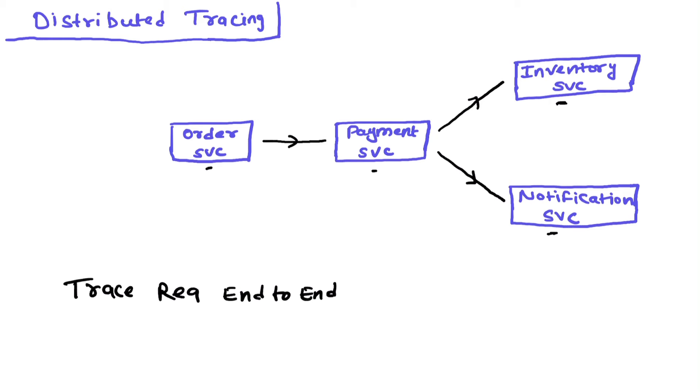In this example, let's assume some user comes to your e-commerce store and places an order. Now every system or module in this architecture is independent, and different teams are working on this. There is a different team working on the order service, different team for payment service, different team for inventory, and different team for notification service.